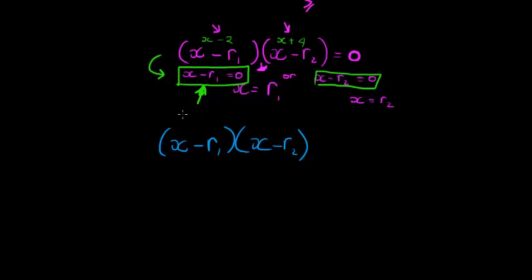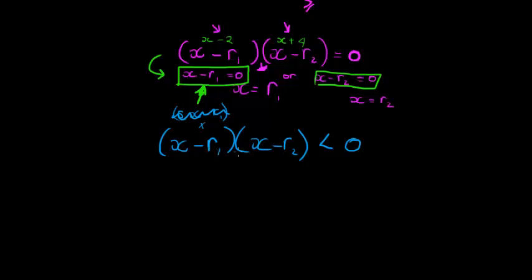Let's choose a sign — I'll choose less than zero. So we have (x − r1)(x − r2) < 0. Remember, I'm not saying the brackets equal zero; I'm saying that when I multiply them together my answer is less than zero, which means the answer is negative.